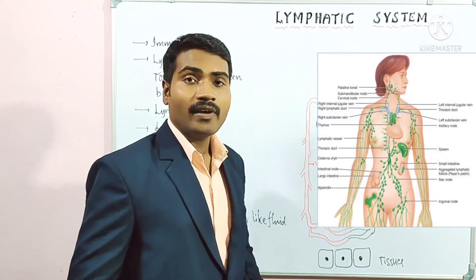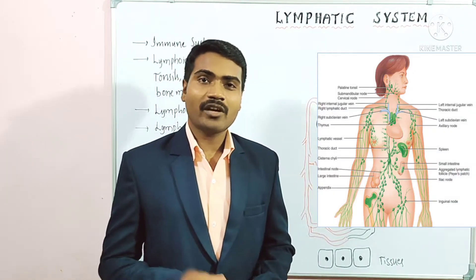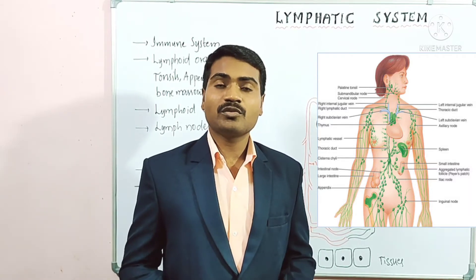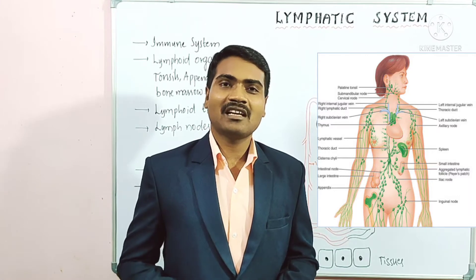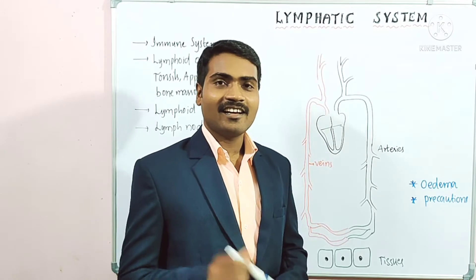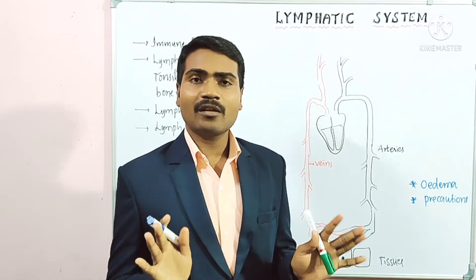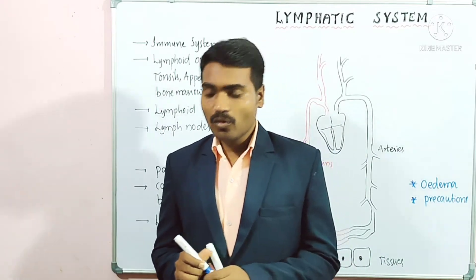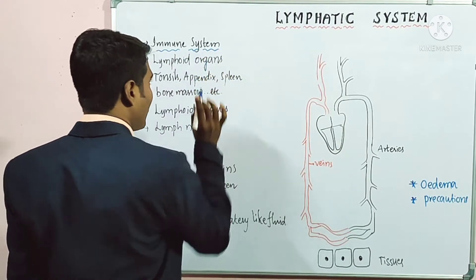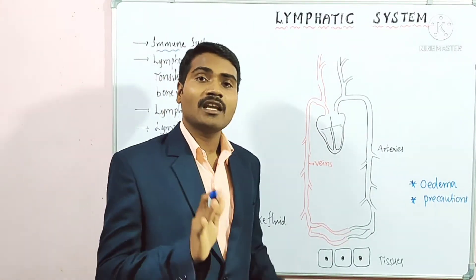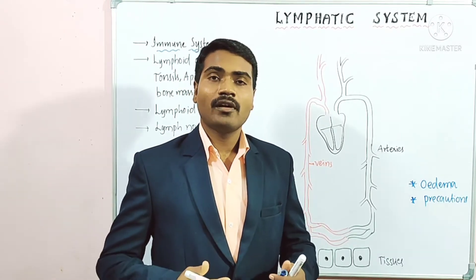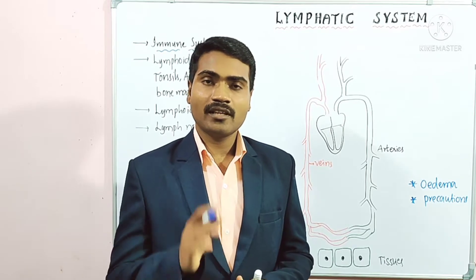What is the lymphatic system? This topic is a little bit confusing to students. The lymphatic system is also known as the immune system of the body. Why immune system? Because it is a system that fights against disease-causing microorganisms. If a foreign particle enters, it produces specific antibodies.